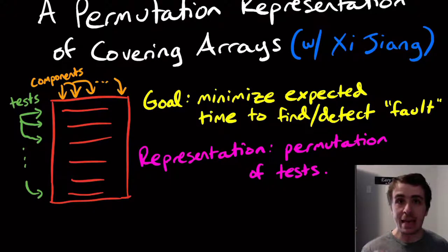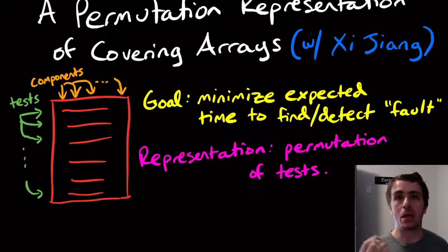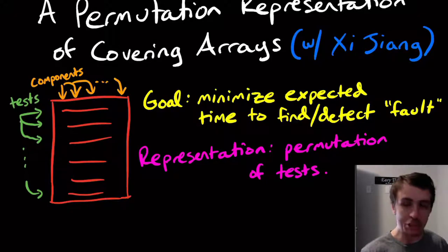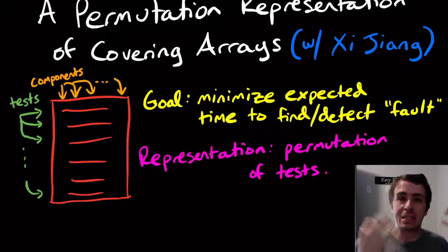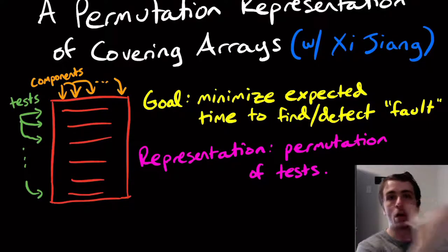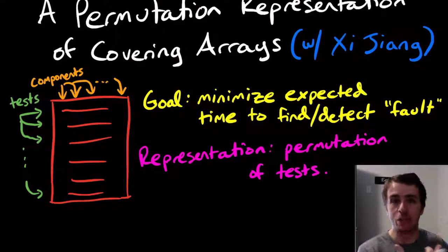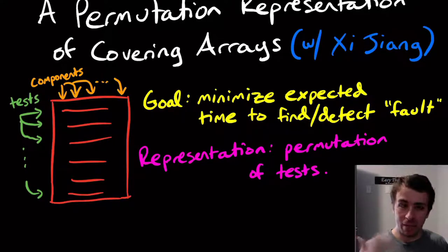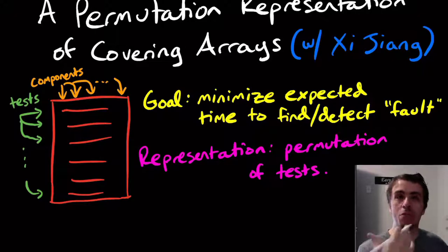The naive representation of covering arrays when used in genetic algorithms is to use the entire array as the individual and then crossbreed the individuals that way. But that has more or less failed because the representation is so large.